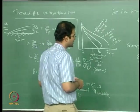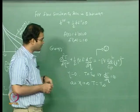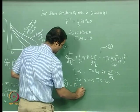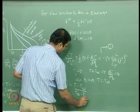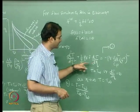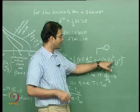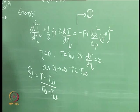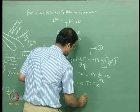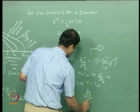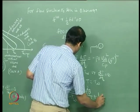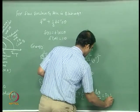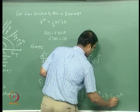Rather than solving this directly, you can define theta as (T – T_wall)/(T_∞ – T_wall), plug it in, divide throughout by T_∞ – T_wall, and define the Eckert number as U_∞² / (C_P (T_wall – T_∞)). In that case you will find a non-dimensional form of this equation.